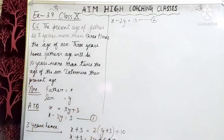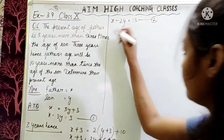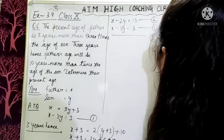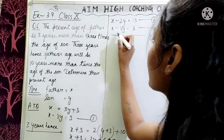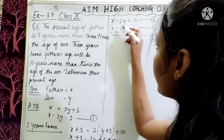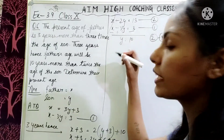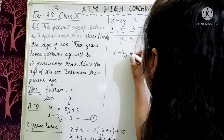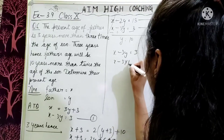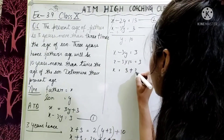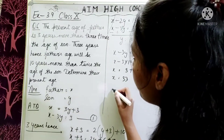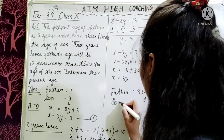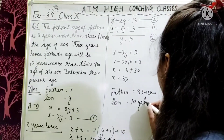3 years hence, father's age will be 10 years more than twice son's age: x + 3 = 2(y + 3) + 10, giving x − 2y = 13 as equation 2. Subtracting equation 1 from equation 2: y = 10. Son's age is 10 years. Substituting: x − 3(10) = 3, so x = 33. Father's age is 33 years and son's age is 10 years.